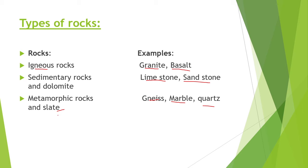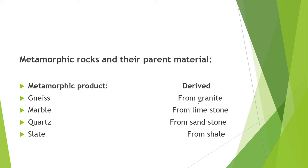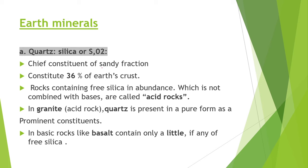In parent material: gneiss is derived from granite, which is an igneous rock. Marble is derived from limestone, which is a sedimentary rock. Quartz is derived from sandstone, and slate is derived from shale. Quartz is the chief constituent of sandy fraction of soil and constitutes 36% of the earth's crust. Rocks containing free silica in abundance not combined with bases are called acidic rocks. In granite, quartz is present in pure form as a prominent constituent, and granite is an example of an acidic rock.